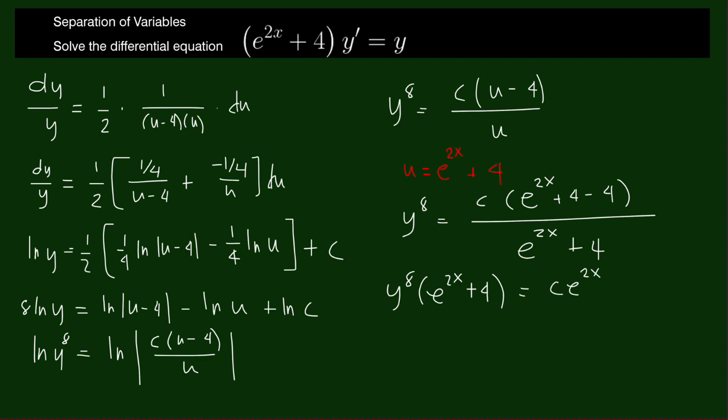We can also simplify this by multiplying with e to the negative 2x. Then we have y to the 8 times 1 plus 4 e to the negative 2x equals c.